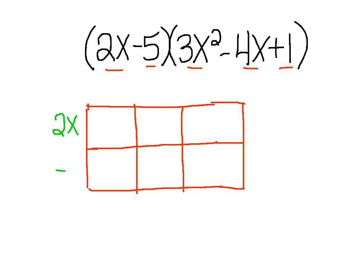Each box is going to have one of our terms: 2x, negative 5, 3x squared, negative 4x, and positive 1. What we multiply going across and going down — the intersections — is where we multiply. So 2x times negative 4x will go in one box, and negative 5 times positive 1 will go in another.